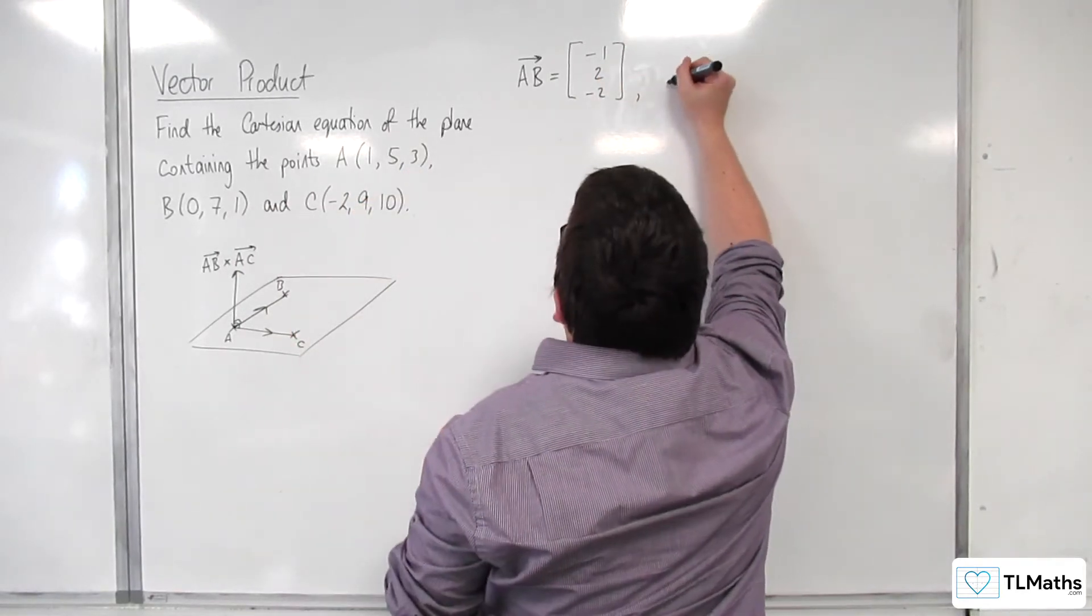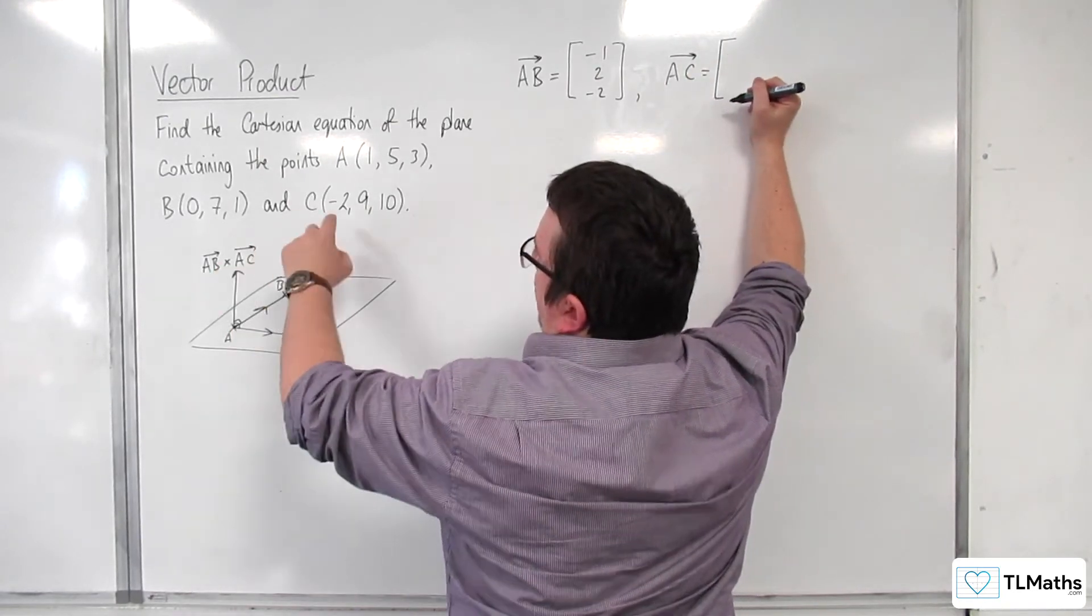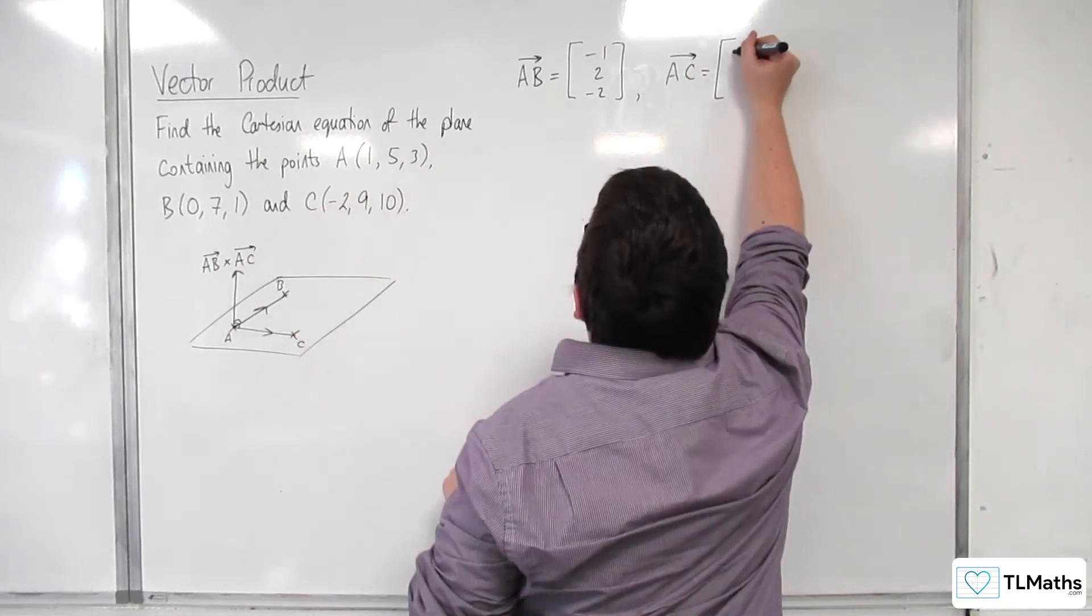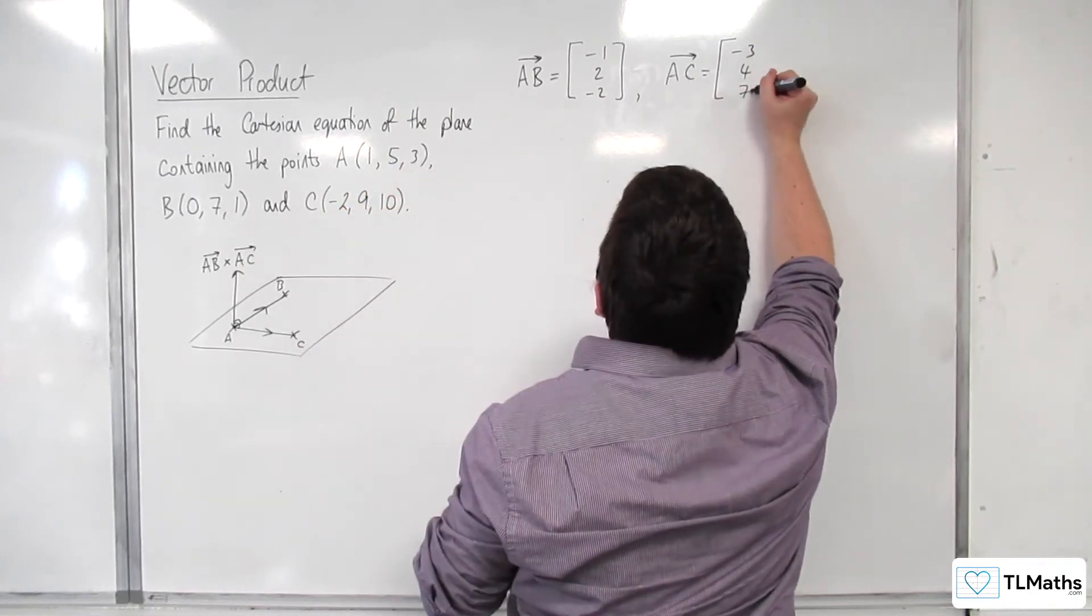And I'm going to work out AC. So OC minus OA: minus 2 take away 1 is minus 3, 9 take away 5 is 4, 10 take away 3 is 7.